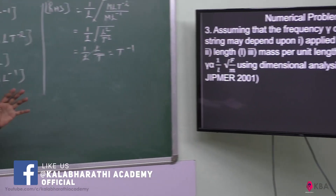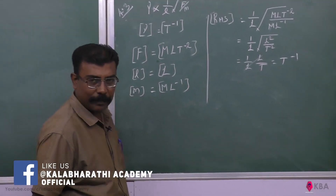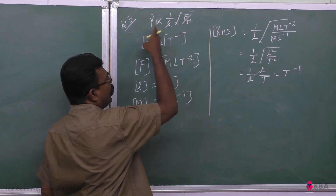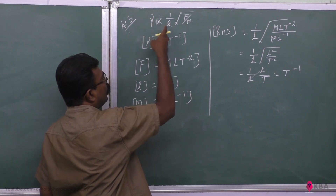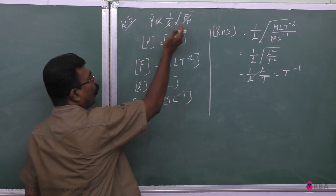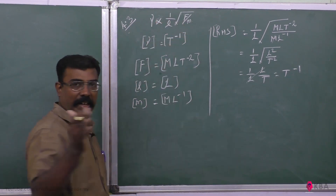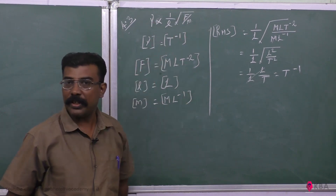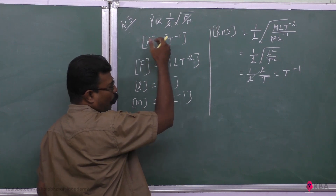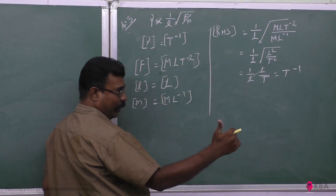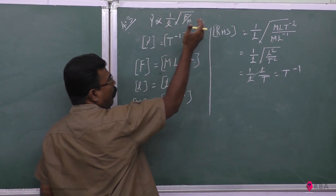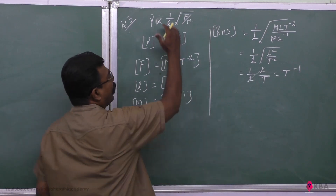So, this frequency is proportional to (1/L) × √(F/M). This should be dimensionally consistent. The dimension of frequency is 1/T — cycles per second, so T to the power minus 1. So the LHS is T⁻¹. Now we do the consistency check on the RHS.